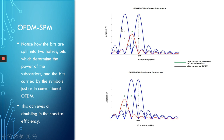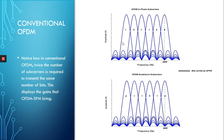As you can see, we are able to transfer a total of 12 bits using only six pairs of subcarriers. In conventional OFDM, in order to transfer 12 bits, we need to use six pairs of subcarriers — whereas in OFDM-SPM we only need three. OFDM-SPM uses half the bandwidth that conventional OFDM would use to transfer the same number of bits.